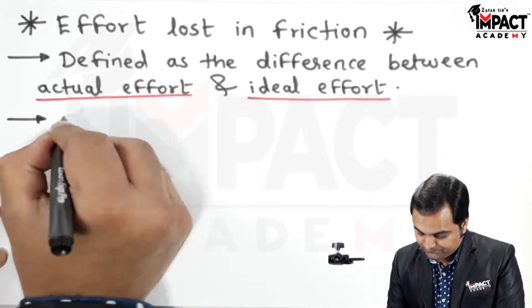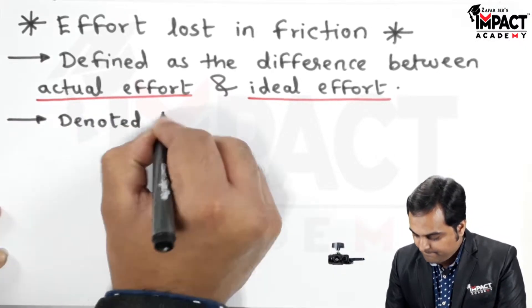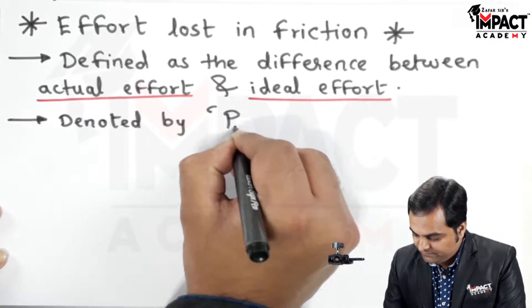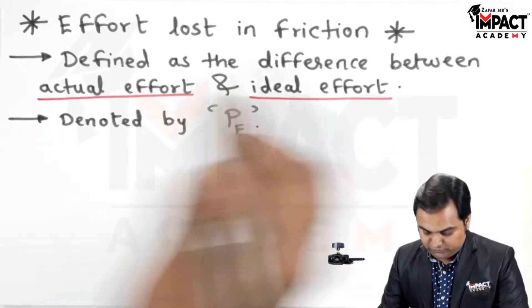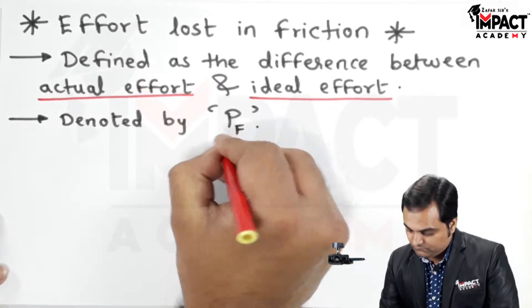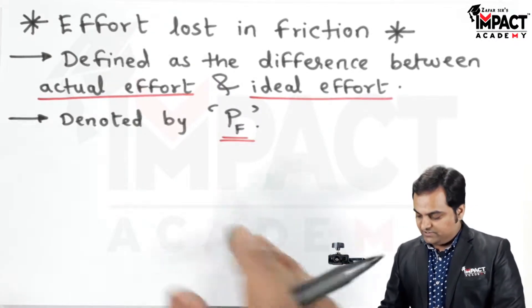It is denoted by P suffix F, that is the effort lost in friction, and the formula is given by